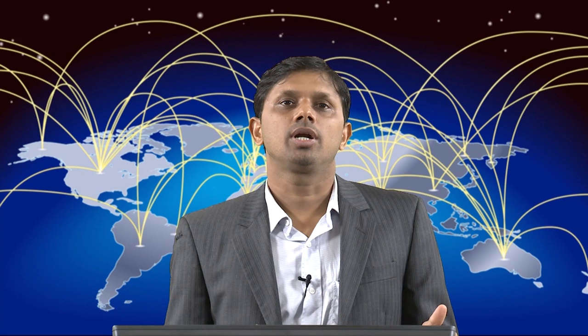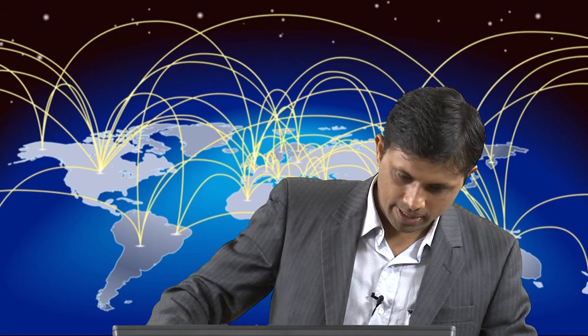In week number 8, the last week, we discussed most importantly economic integration. After understanding restrictions, and after theories and tariff and non-tariff protection, we unfolded the discussion of integration — how member countries are integrating and joining hands together to develop strategies and protect themselves. We discussed the history of integration, blocks compared to blocks, their success and failure aspects. Types of trade blocks discussed include preferential trading agreements, free trade areas, customs unions, common markets, economic unions, with examples from Mercosur, ASEAN, European Union, SAFTA, and NAFTA. As per WTO discussion, principles include non-discrimination and MFN status, with exceptions discussed in the succeeding lecture.